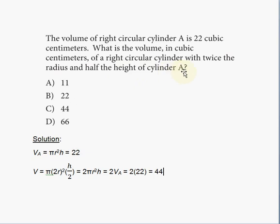So the first thing that I would do is I would write the volume formula for the cylinder A. And that is going to be πr²h. R represents the radius and h represents the height. And in this formula the radius is squared and the whole thing, everything is multiplied together. π times r² times h. And that is given as 22, the volume of cylinder A, 22 cubic centimeters.